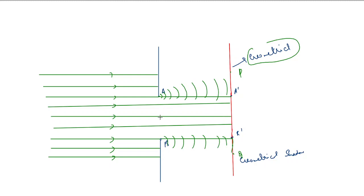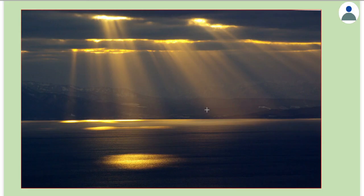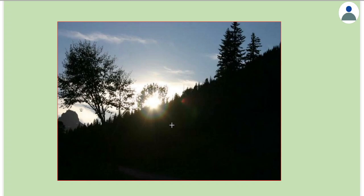Something interesting happens: if the width of this opening is made very very small, on the screen we get a pattern of alternating dark and bright bands. This happens only if the width of the region through which light enters is very small. There are many examples of diffraction around us — because of a very narrow region we get dark and then bright regions. Particles in the atmosphere can also act like diffractors. You can see rings around the sun — even this is because of diffraction of light.